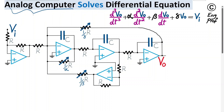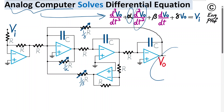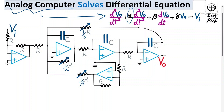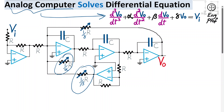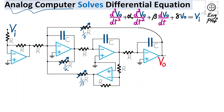The analog computer presented and analyzed in this video is implemented using five ideal op-amps, and it can solve a third-order programmable differential equation in which the coefficients alpha for the second derivative of Vout, beta for the first derivative of Vout, and gamma for Vout are defined by three potentiometers in the circuit. We can adjust the circuit so that it solves the needed differential equation depending on what coefficients we apply.